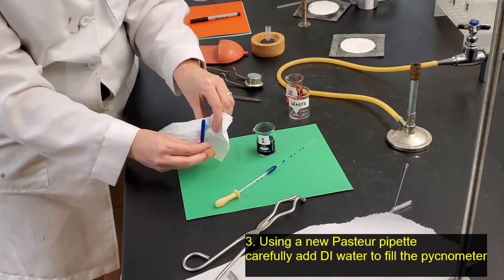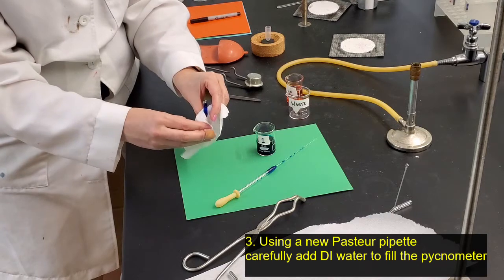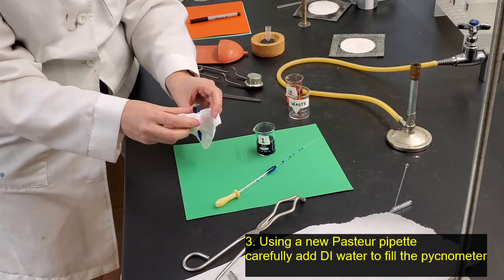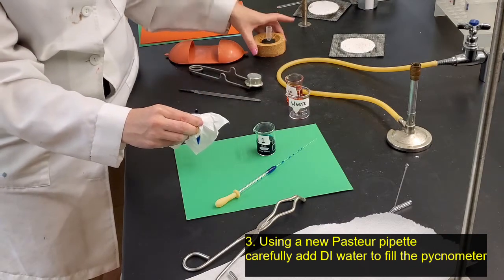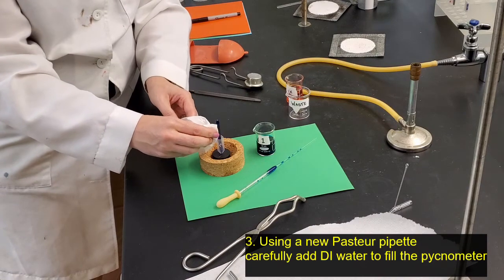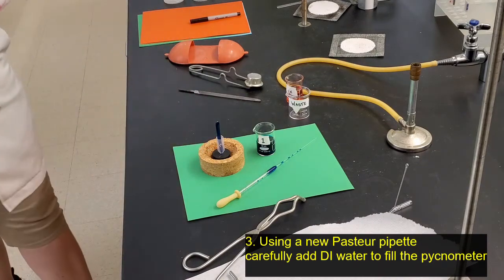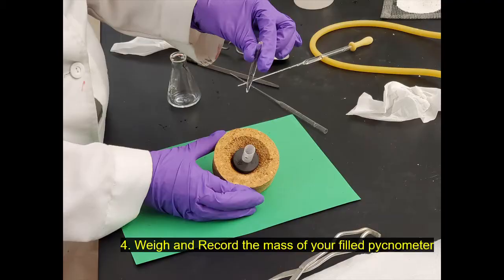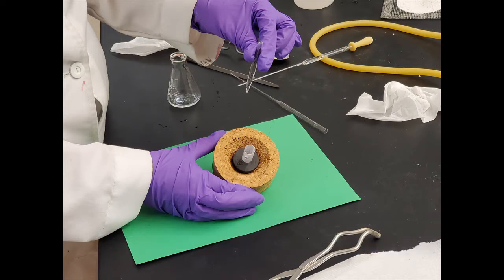Now before I weigh it, I want to make sure the outside is nice and dry, so I'm going to get a chem wipe. These are located at the bottom of your lab bench, and just wipe from the bottom up. I don't want to actually get that tissue inside the pycnometer so it acts like a wick, so just a smooth motion. I'm avoiding getting my fingerprints on the pycnometer, and then I'll place it inside the holder, and now I'm ready to get a weight of the filled pycnometer.